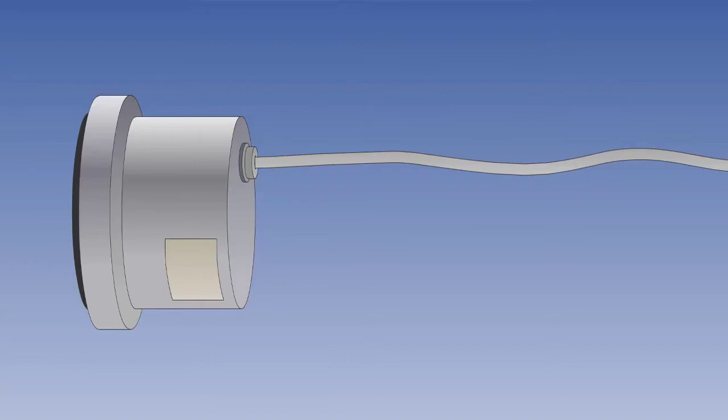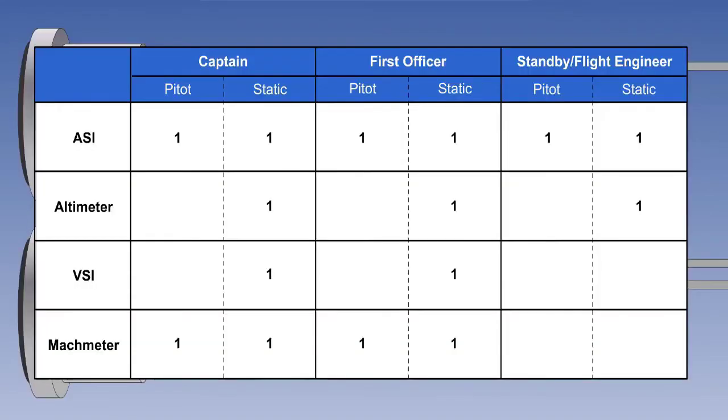Each static instrument would have had its own static line, and the pitot instruments would have had both a pitot and a static line. This would be a minimum of 15 pitot or static lines, all running from the pitot tube and static vents up to the back of each instrument. Clearly, there is a lot of duplication, and, more importantly, a large network of perishable piping, which, if it failed...